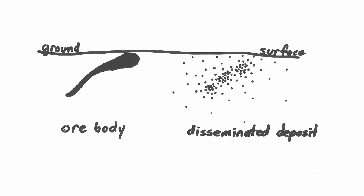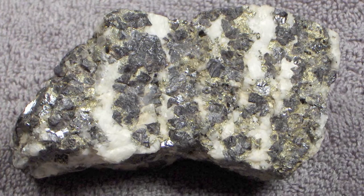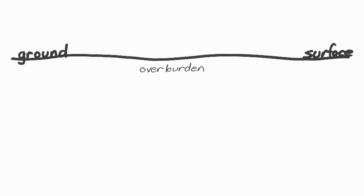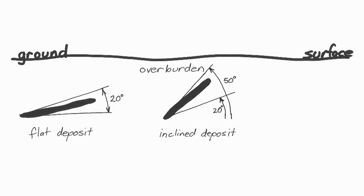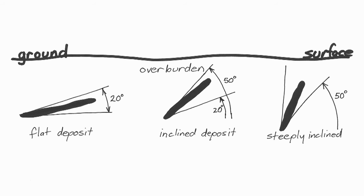Let's define some terms used to describe different types of deposits. An ore body is a deposit of ore, usually with gang, with well-defined extent. Ore bodies can be of any shape such as veins, layers, lenses or pipes. Disseminated ore is a deposit where the ore is spread throughout worthless rock without forming a well-defined body. Overburden is the rock that lies directly above an ore body if the body is not exposed directly at the surface. A flat deposit is a mineral deposit occurring as a horizontal or gently dipping body, usually at an angle of less than about 20 degrees. An inclined deposit is a mineral deposit occurring as a dipping body, separated into inclined — between 20 and 50 degrees — and steeply inclined, above about 50 degrees, up to vertical.